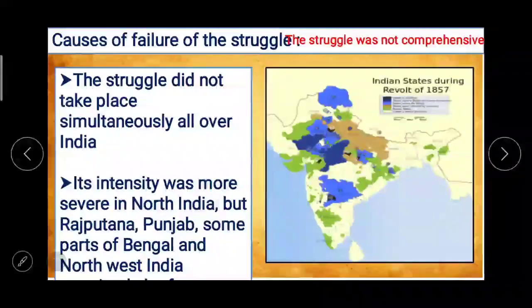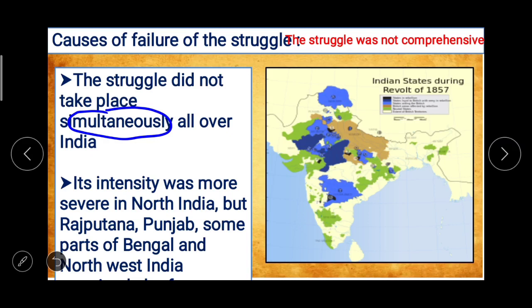The struggle was not comprehensive — it did not take place simultaneously all over India. As we saw on the map, the uprising was not uniform; in some places it was less, in some places more, some places it started late, some very early. Its intensity was more severe in North India, but Rajputana, Punjab, and some parts of Bengal and North West India remained aloof.